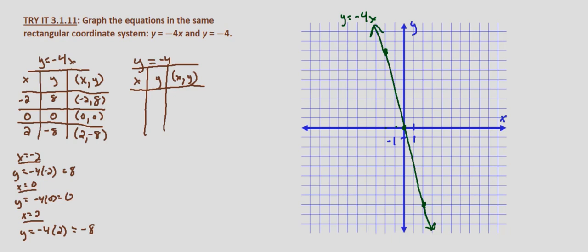Now with y equals negative 4, it doesn't matter what we put in for x. At x equals negative 2, y is negative 4. At x equals 0, y is negative 4.